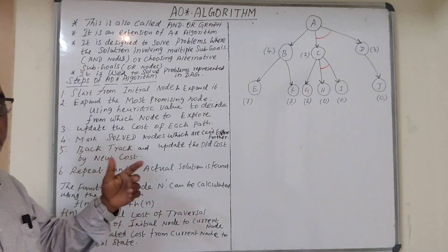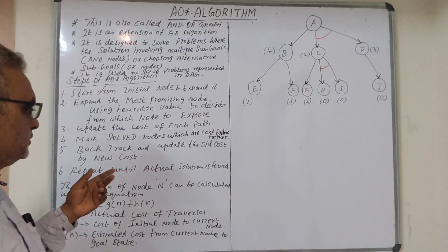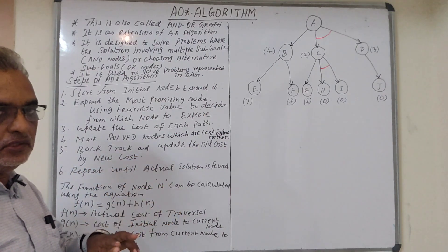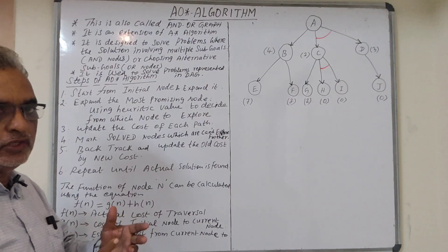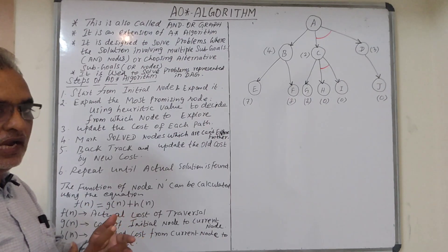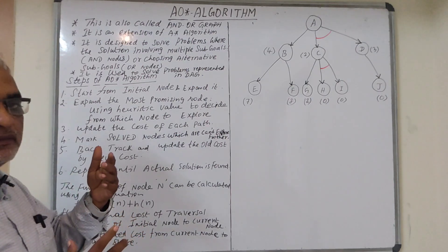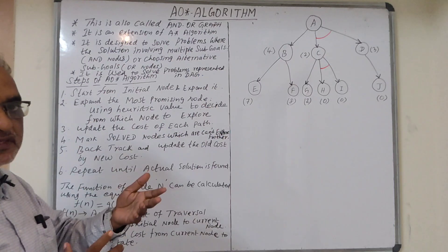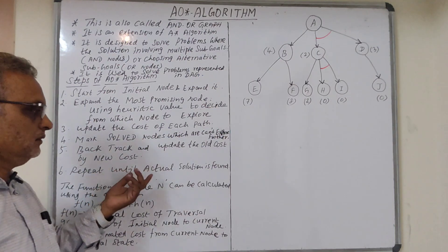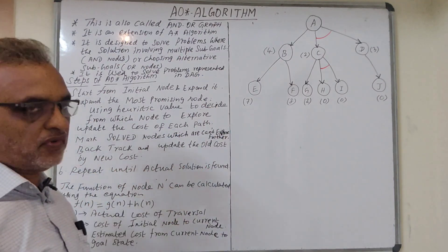Backtrack and update the old cost with the new cost after getting the new heuristic value — the new value should replace the old value. Repeat until the actual solution is found.